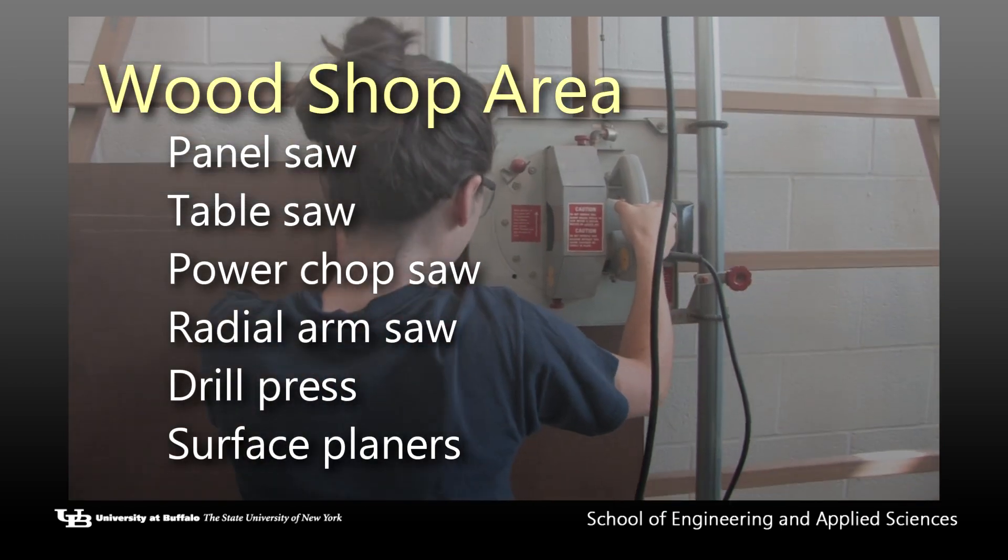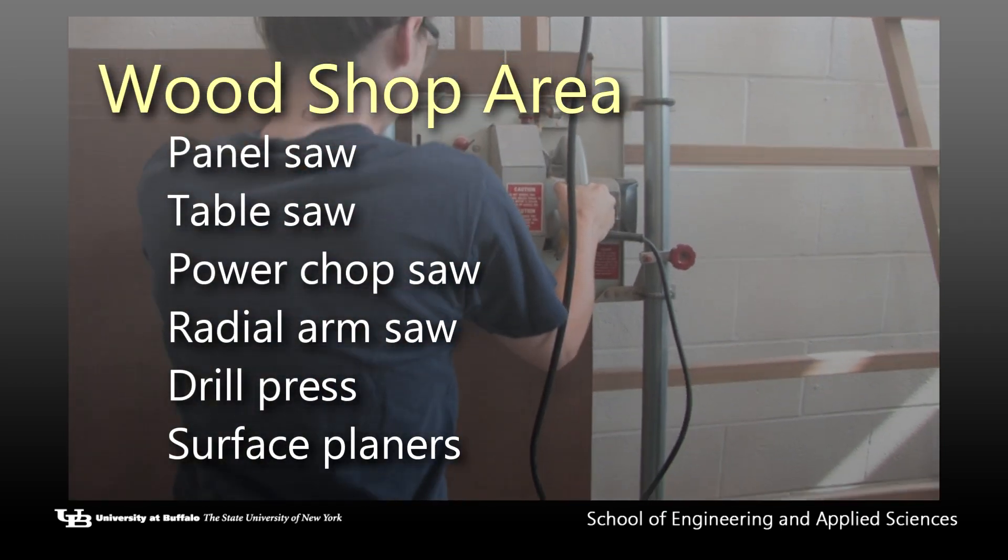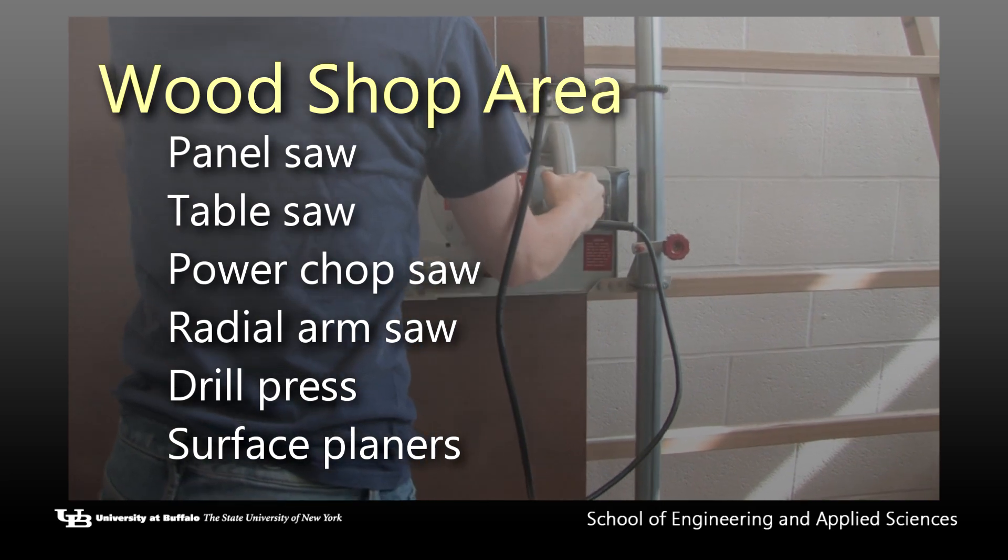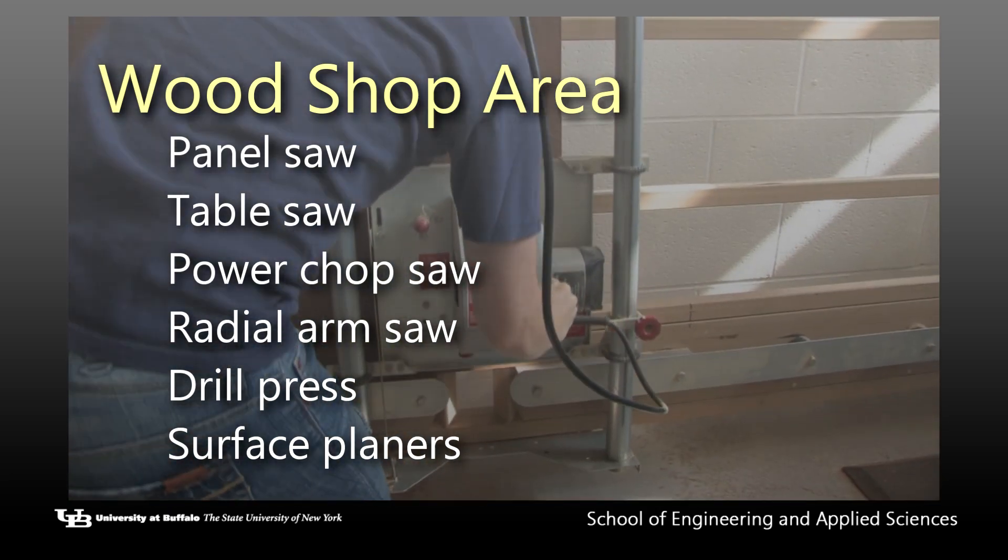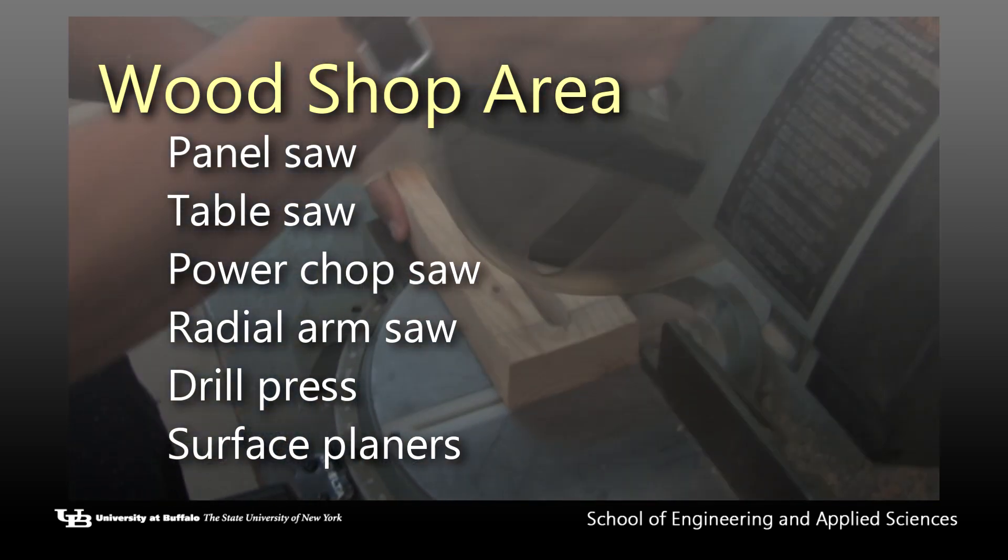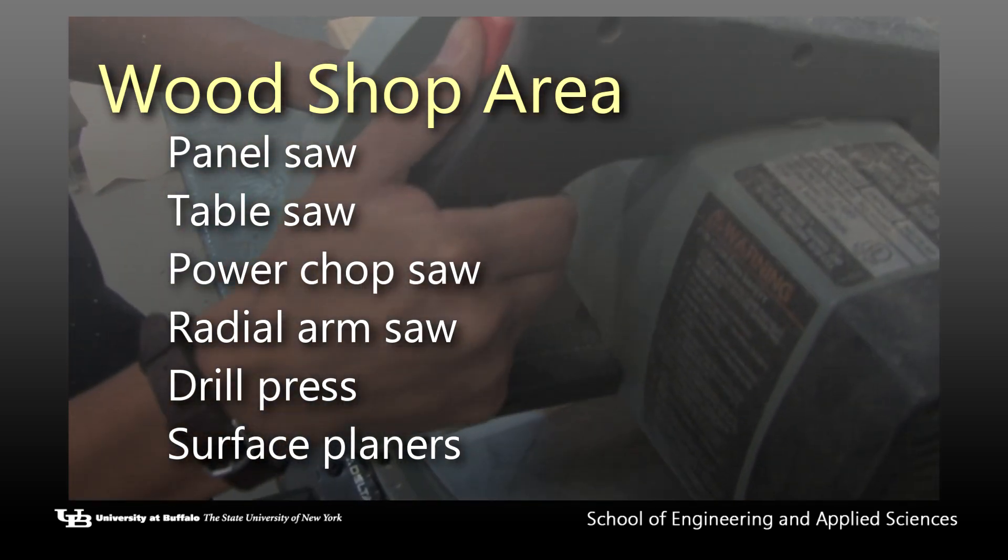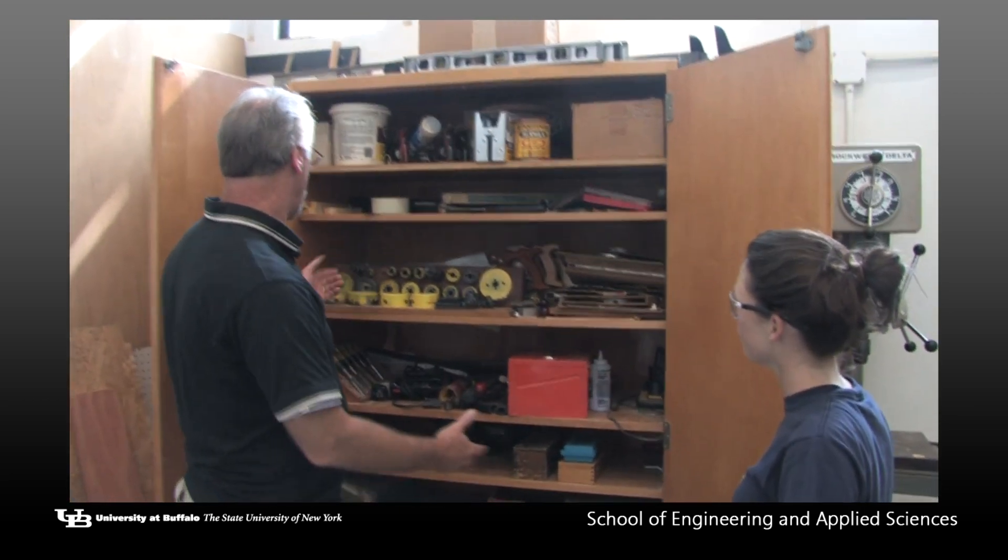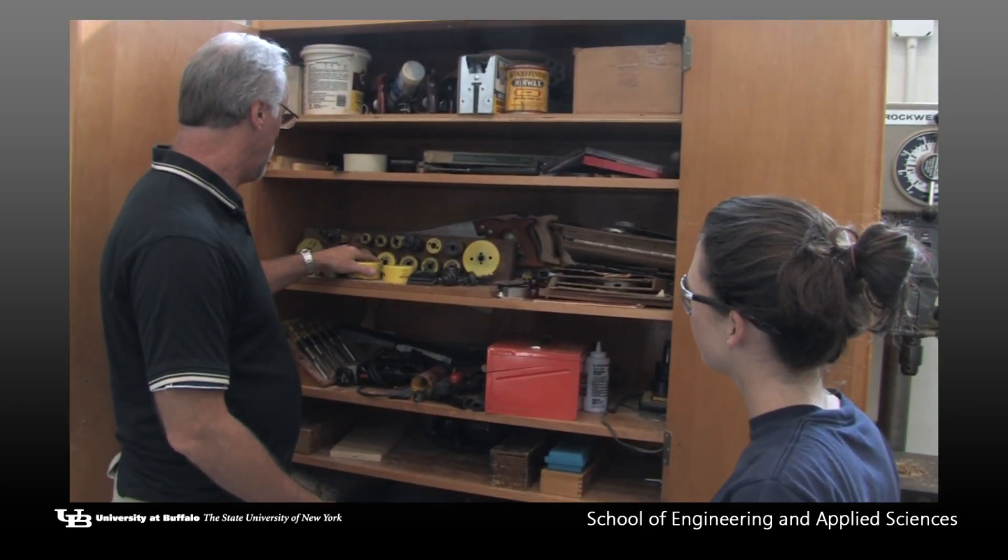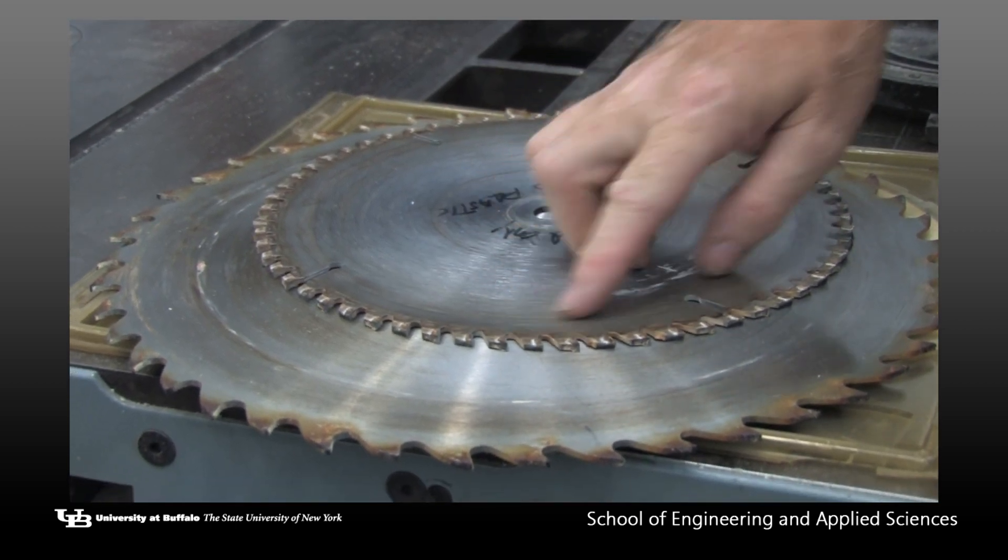The wood shop area of the shop includes a panel saw for large wood or plastic sheets, a table saw for smaller cuts, power chop saw for framing lumber, radial arm saw, drill press, and surface planers. The wood shop also has a variety of cutting blades suited for various equipment and materials.